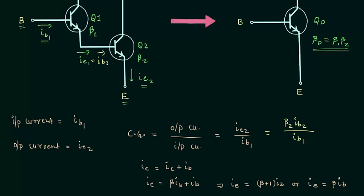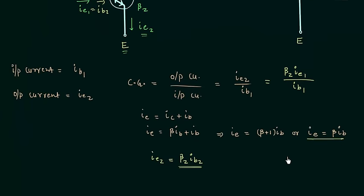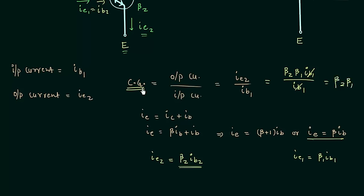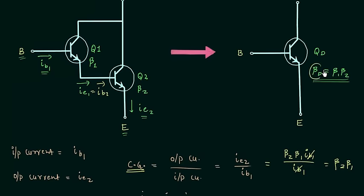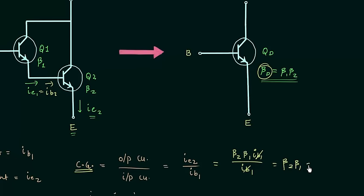In place of IB2 we write IE1, and using the earlier result IE1 equals beta1 times IB1. Substituting, we get beta2 times beta1 times IB1 divided by IB1. IB1 cancels out, and the current gain equals beta2 times beta1. Therefore beta_d equals beta2 multiplied by beta1, and we have proved the above point.